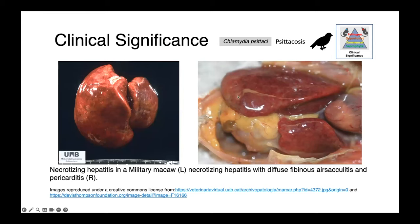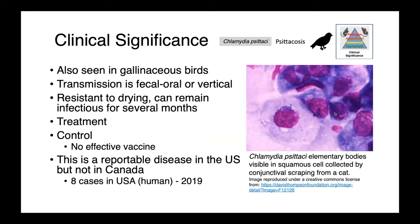We also see necrotizing hepatitis with a very mottled, irregular, congested-looking liver, along with fibrinous air sacculitis and pericarditis. Chlamydia psittaci can also be seen in gallinaceous birds — so not just psittacines, but chickens and many other avian species. Transmission of this organism is either fecal-oral or vertical. The elementary bodies shed in feces are quite resistant to drying and can remain infectious for several months in the environment. Treatment relies on antimicrobials, and unfortunately we have no vaccines available. In the United States, this is a reportable disease in people — in 2019, eight cases were reported. In Canada, this is not a reportable disease, so we don't have annual incidence data, though the rate would likely be proportional population-wise to what's seen in the US.